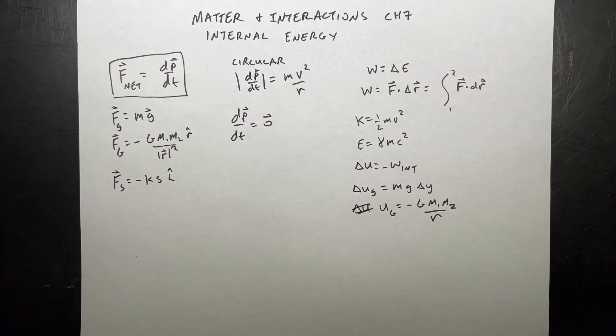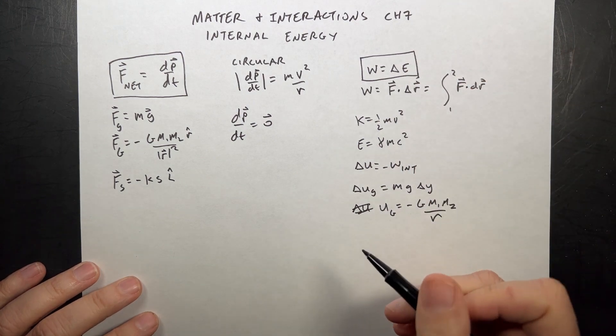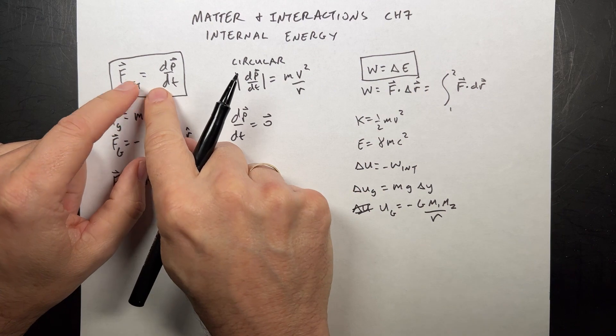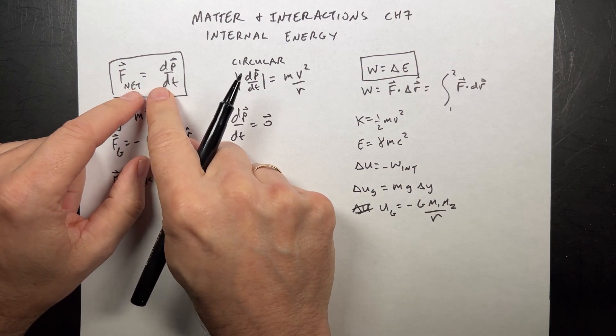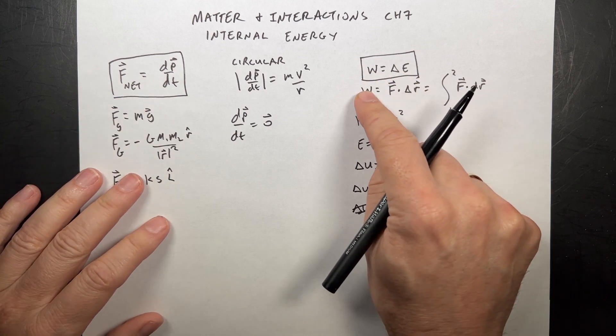In chapter six, we started a new way of doing problems, the work energy principle that says work is a change in energy. This deals with vectors and gives you a vector answer and time. This deals with scalar answers, energy, and displacement.